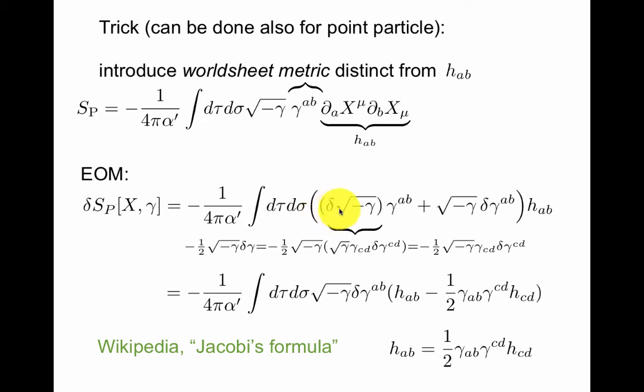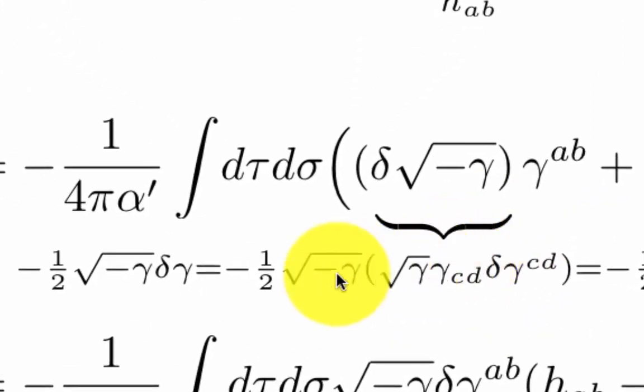You take the variation. This one is obvious. You vary the metric here. You get this thing. But you also need to vary the determinant. And you use something called Jacobi's formula from linear algebra. This is what you know from general relativity, how you vary a determinant. You multiply it out, and then you relabel indices CD to AB. So you can combine these two terms nicely into this combination.